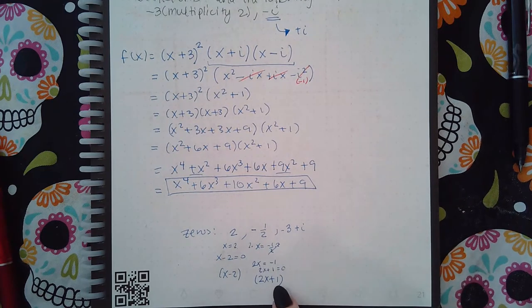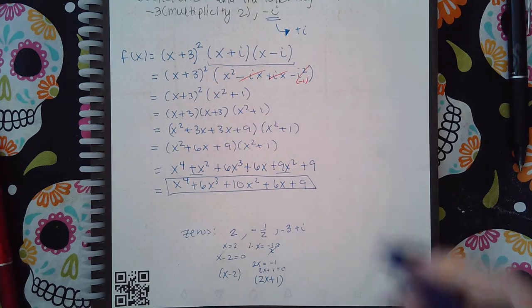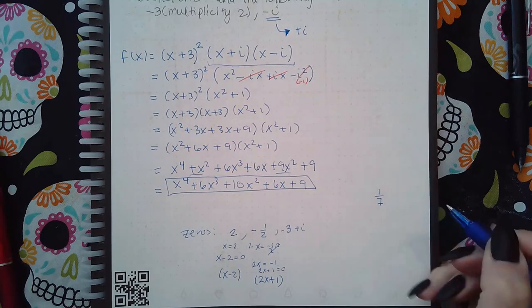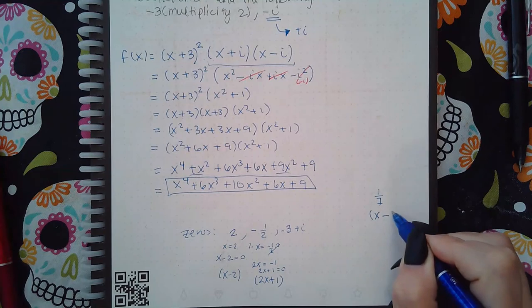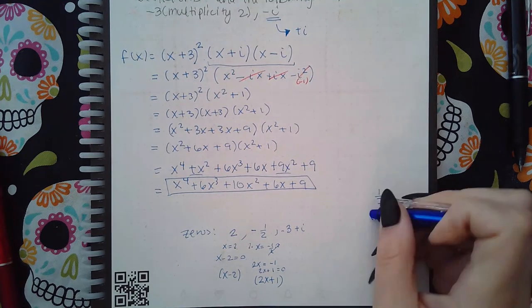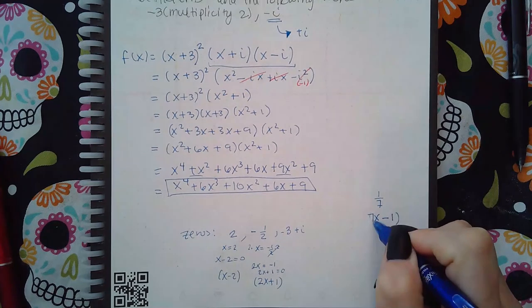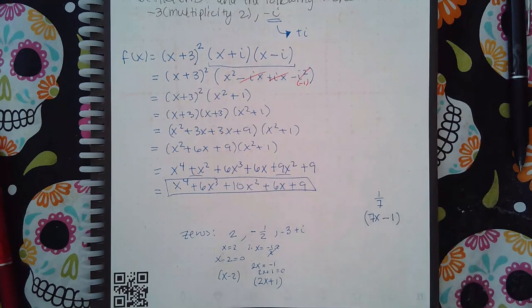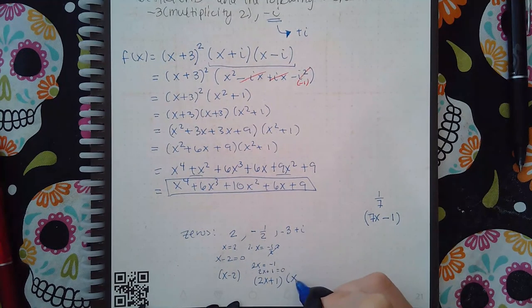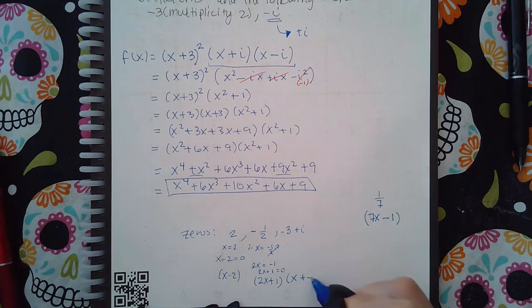So not only do you use the opposite sign, but the denominator becomes the coefficient of x in the factor. You don't have to do all of this every single time; you just have to remember that yes I need the opposite sign and I need the numerator, but the denominator will become the coefficient in the front. For example, if I have one-seventh as a zero, my factor is going to be (7x-1). The denominator becomes the coefficient, so if I were to set this equal to zero, I would get positive one-seventh as my solution.